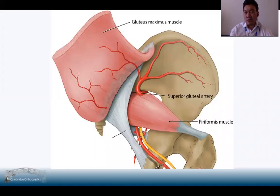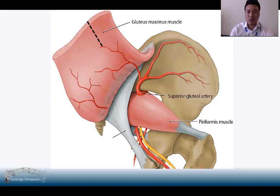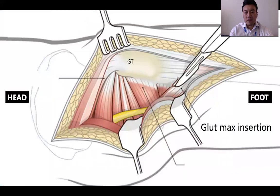This image demonstrates why the modified Gibson approach is so extensile — if you dissect out in front of the gluteus maximus muscle, you can go all the way up to the iliac crest without compromising any of the blood supply. With a more standard Kocher-Langenbeck approach, you would be limited proximally by branches of the superior gluteal artery. I routinely take down the gluteus maximus insertion to give more exposure, and this can be repaired at the end of the operation.